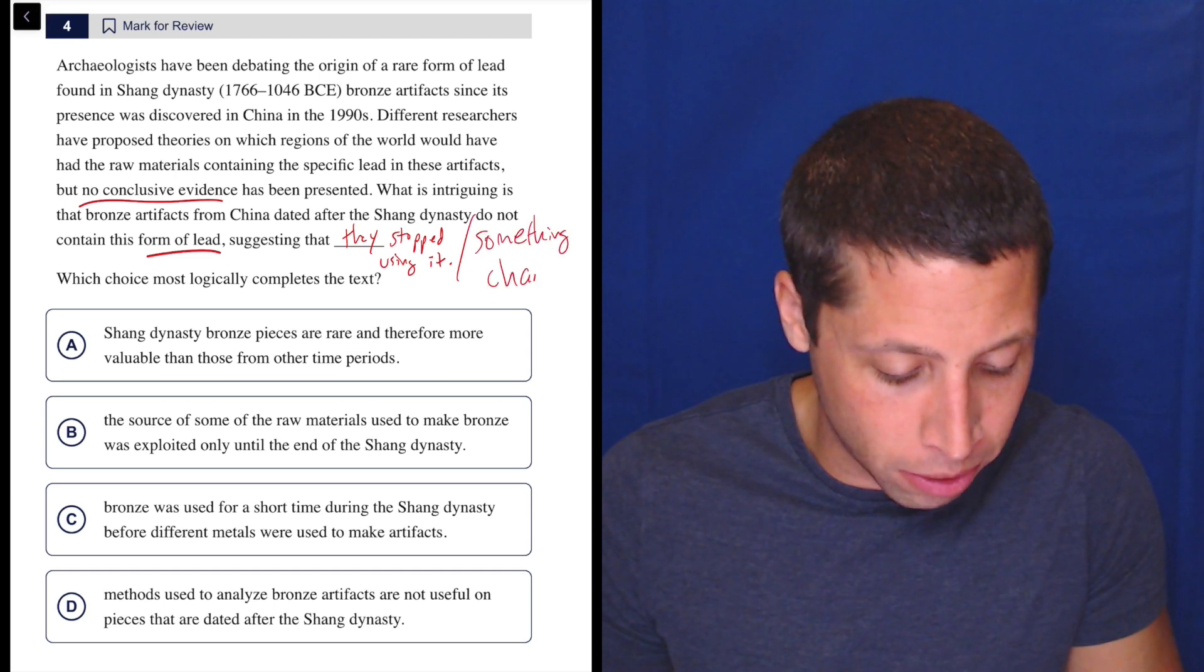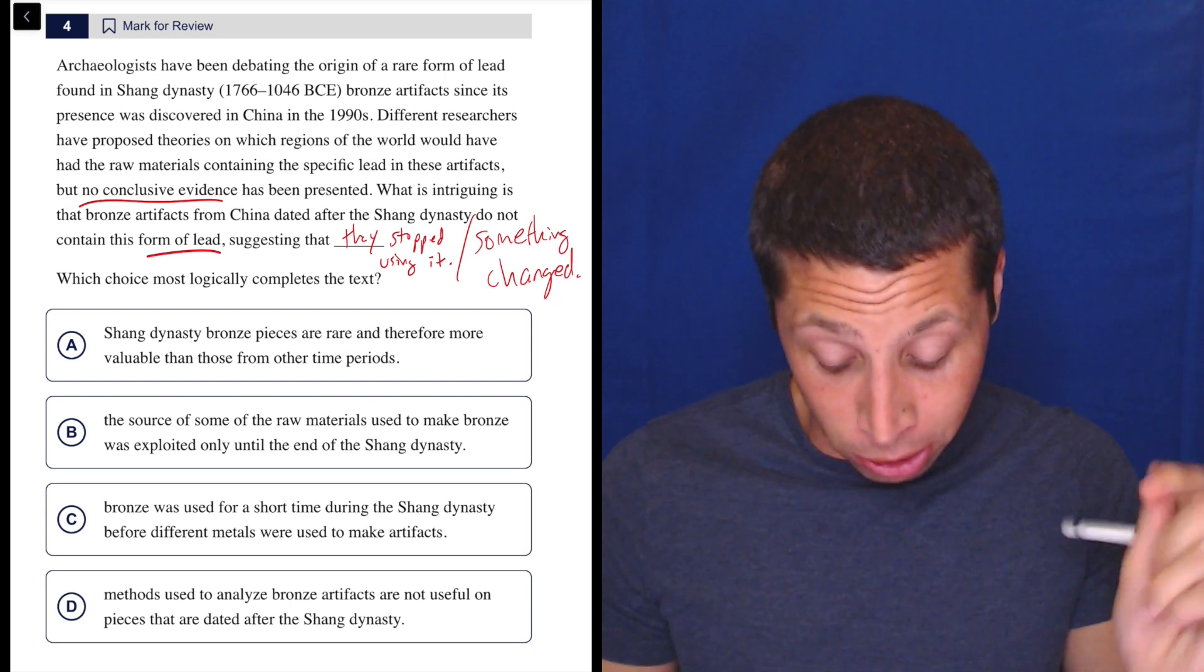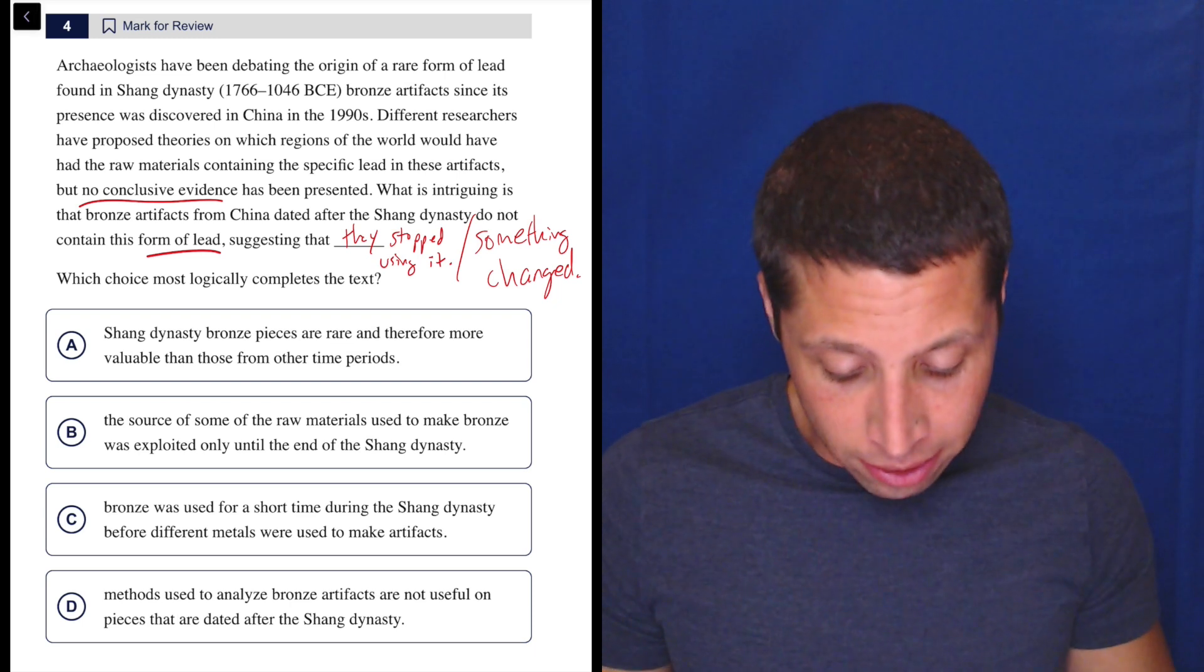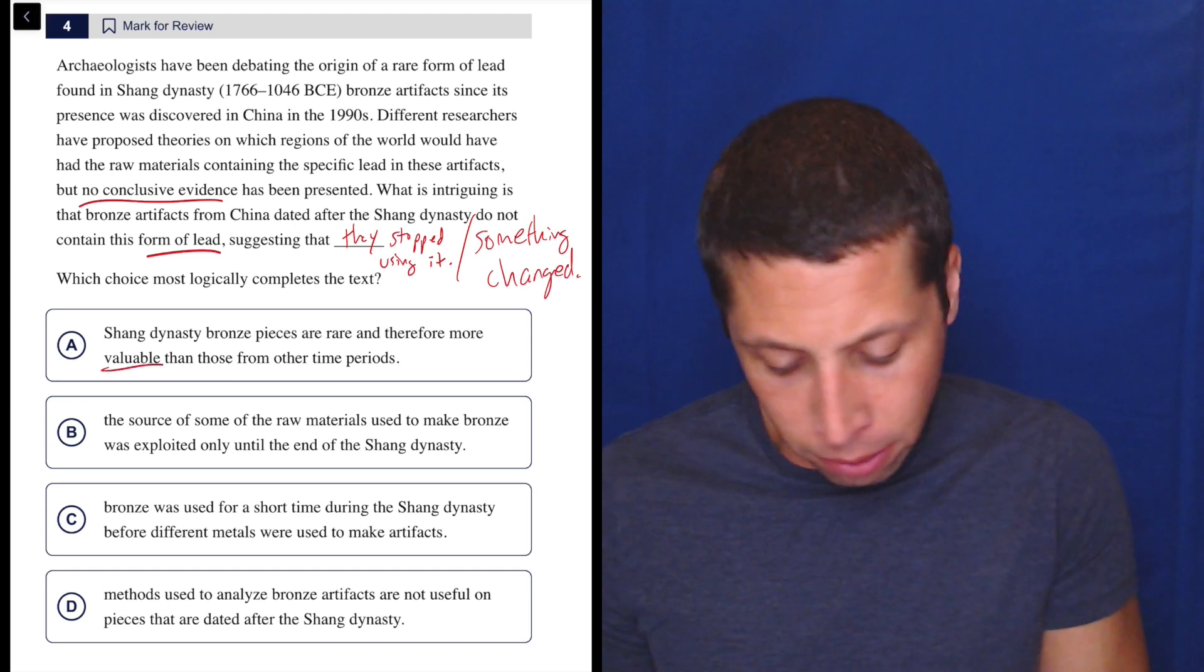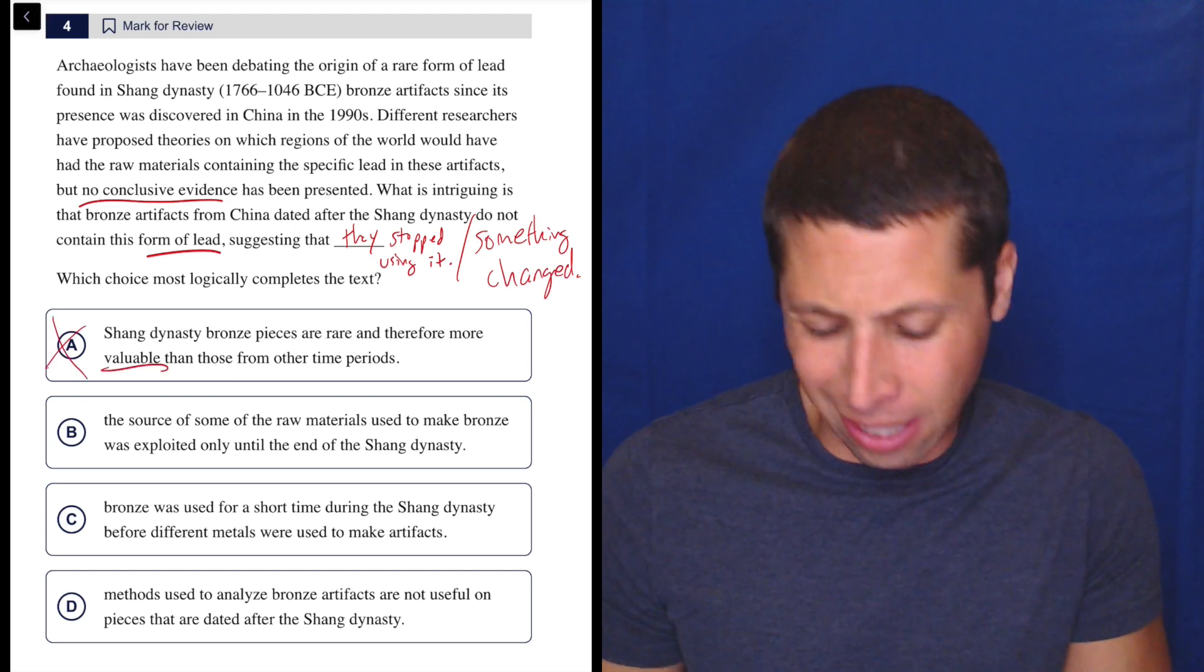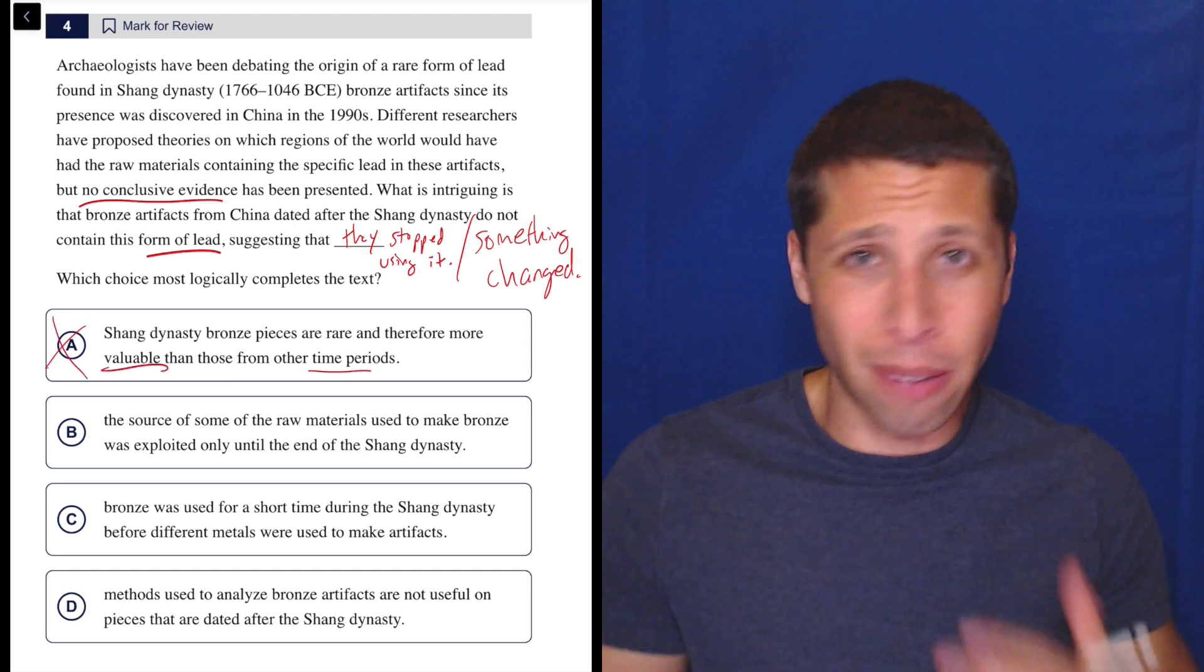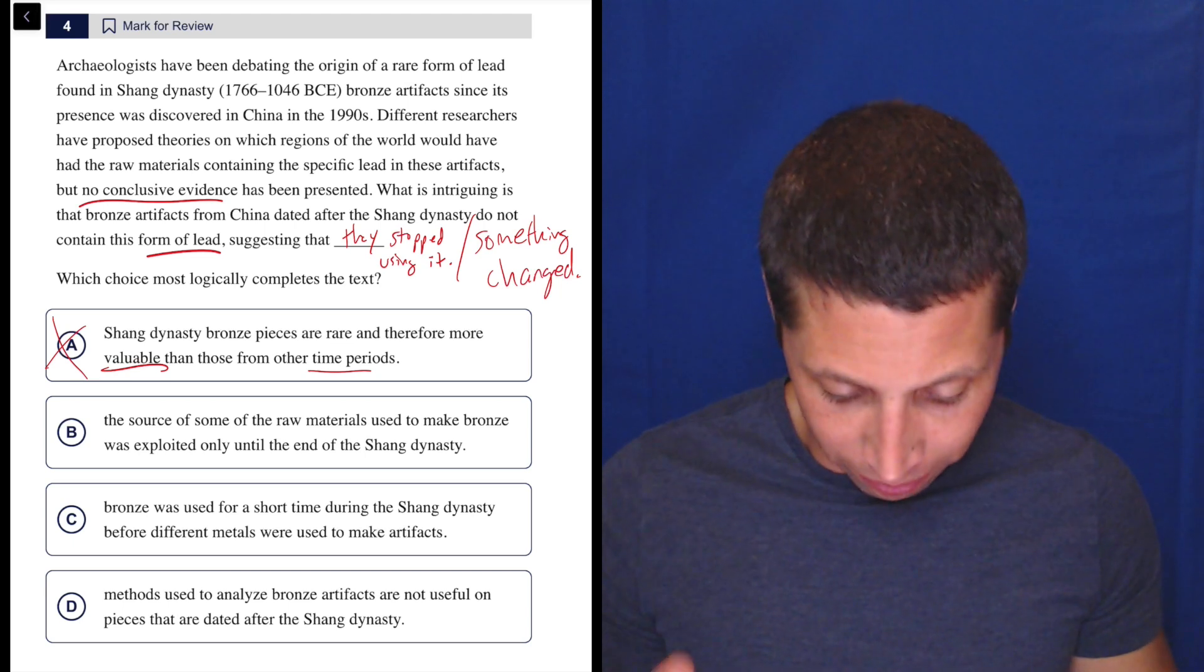Very dumb, very dumb summary. Okay, let's look at the choices. The Shang Dynasty bronze pieces are rare and therefore more valuable than those from other time periods. I don't care about the value, right? So it's a comparison. Other time periods, I don't care what they're worth. So get rid of it.